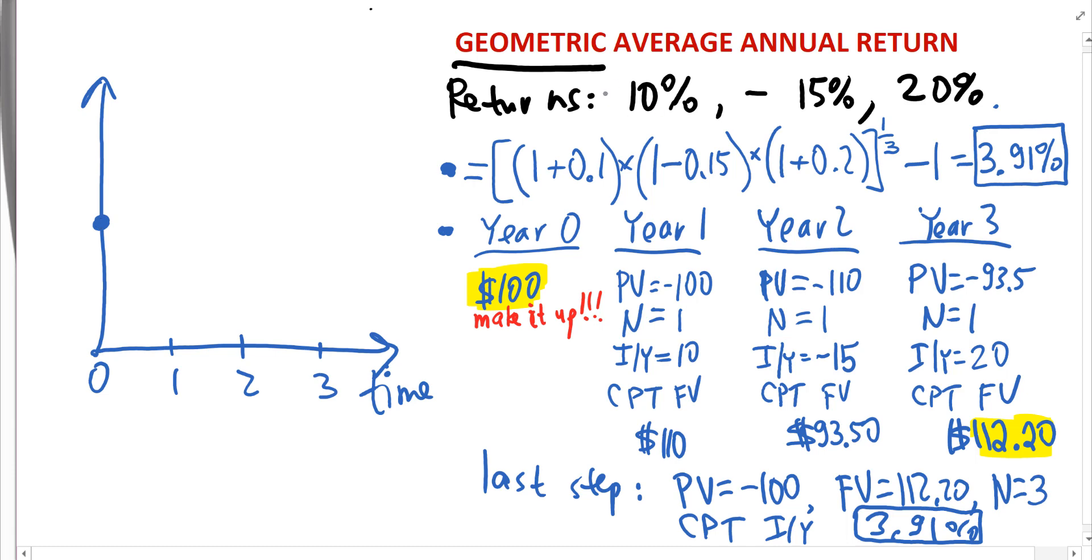instead of saying that, so we start somewhere here. I just randomly pick this point and then the price goes to by 10%, right? Over the first year. So this is plus 10%. Then what we are given is a 15% drop. So something like this, right?